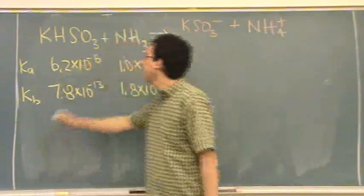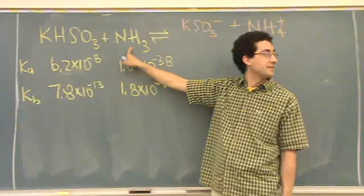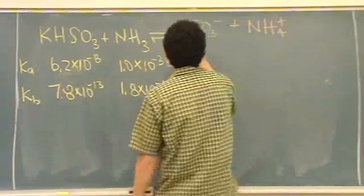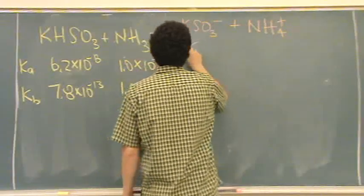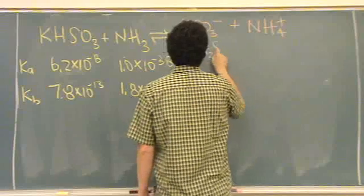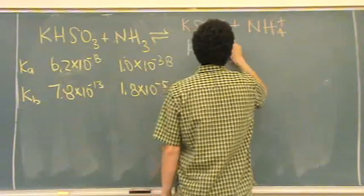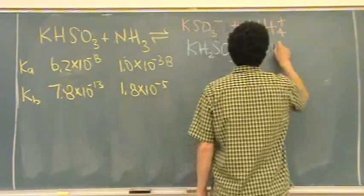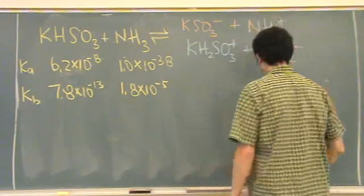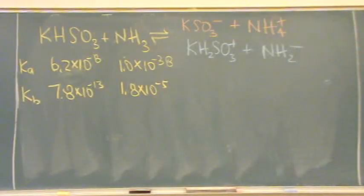The other possible answer is if this one's the acid. If that's the acid, then you get KHSO₃ plus NH₂⁻. And you don't know which one is the acid. That's why I gave you all the K values. The K values will tell you which one's stronger.